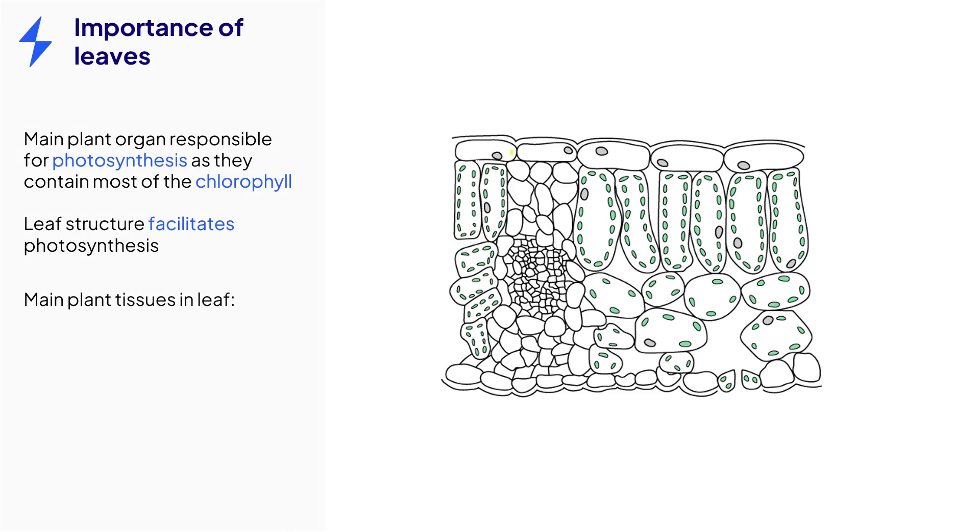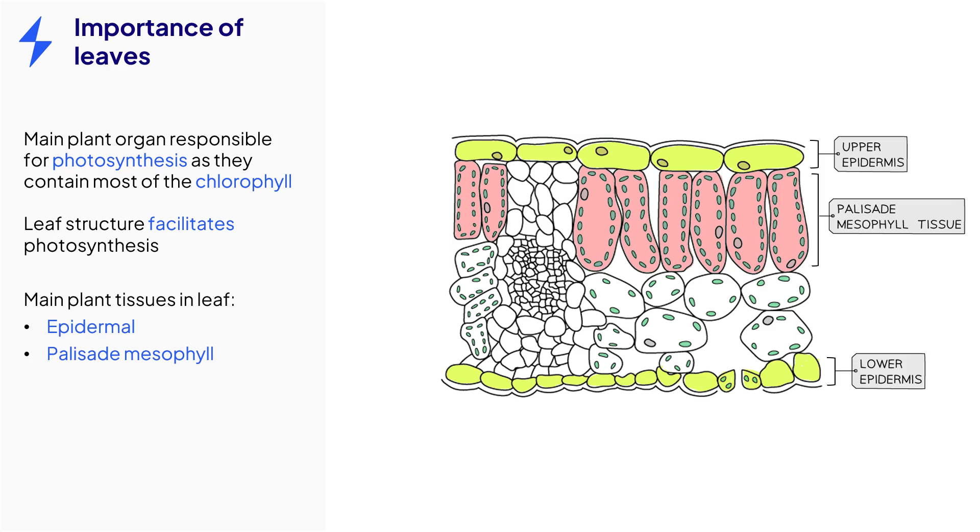The main tissue types in a leaf include epidermal tissue, palisade mesophyll, spongy mesophyll, and xylem and phloem found in vascular bundles.